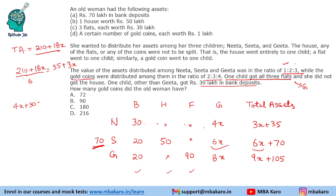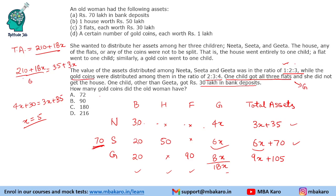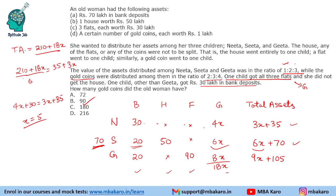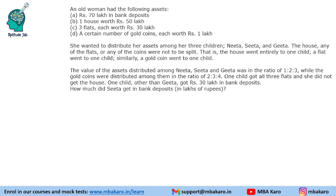Using the equation: 4x + 30 = 3x + 35, we get x = 5. We can verify: Sita's assets are 6x + 70 = 100, and Geeta's are 8x + 110 = 9x + 105, which also gives x = 5. The woman had 18x gold coins, which equals 90 gold coins. The next question asks how much Sita got in bank deposits: Sita gets 20 lakhs in bank deposits, so the answer is 20. This concludes the solution to the set.